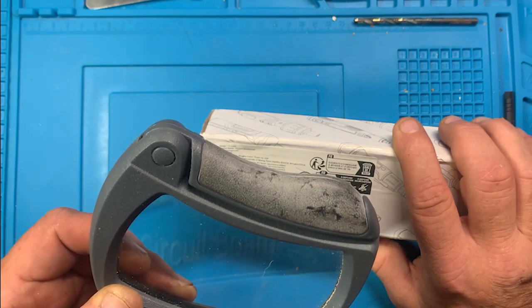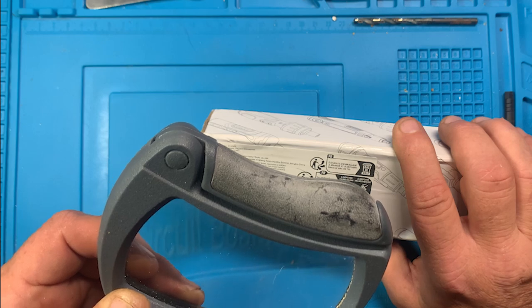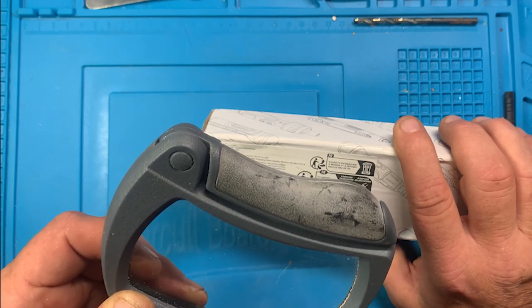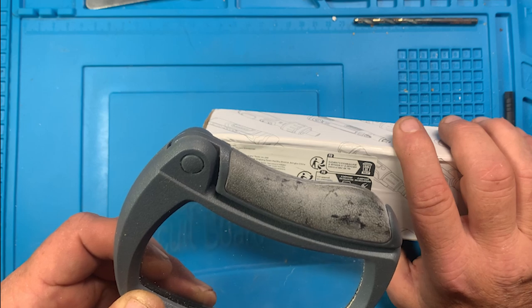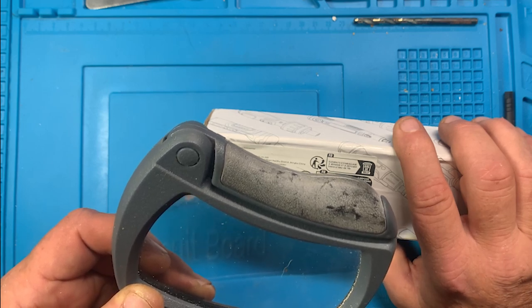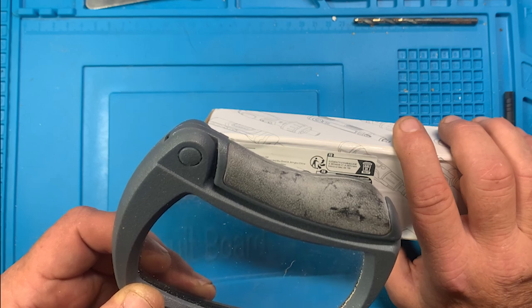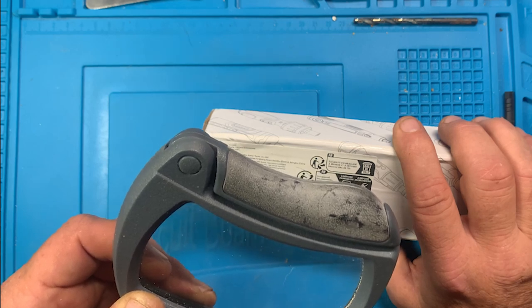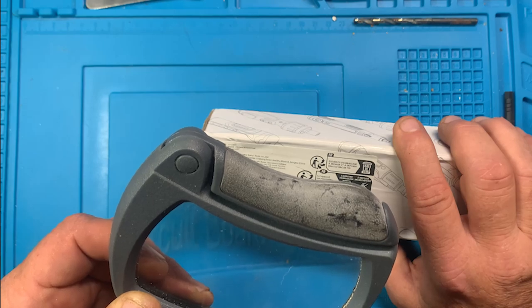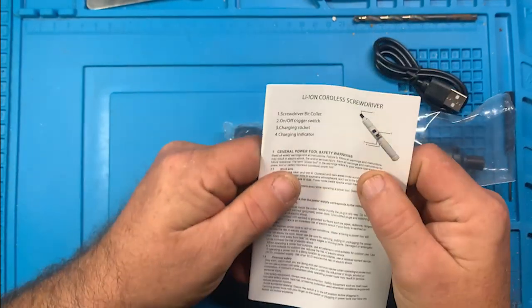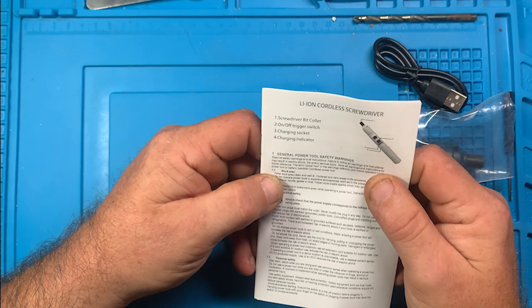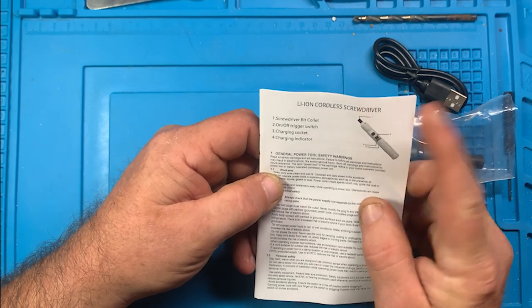The battery is 1,300, which I assume is going to be 1,300 milliamp-hours. And the manufacturer is Ningbo Tianyi Tools, T-I-A-N-Y-I, lithium-ion cordless screwdriver. Screwdriver bit, that's it.